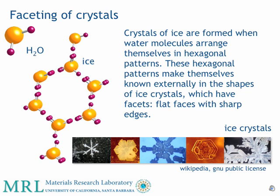One of the properties of crystals is that they are sharp-sided. These sharp sides are called facets. Crystals of ice are formed when water molecules arrange themselves in hexagonal patterns, which we see in snowflakes. These hexagonal patterns make themselves known externally in the shapes of ice crystals, which have facets — flat faces with sharp edges. So we can tell if something is a crystal by just looking to see if it has sharp edges.